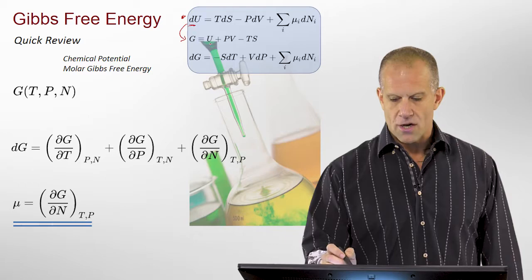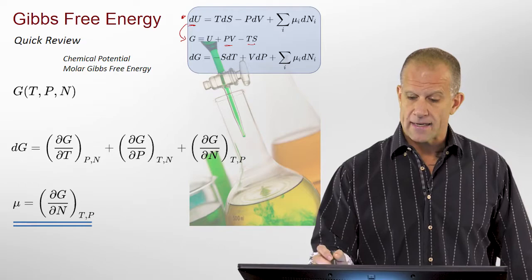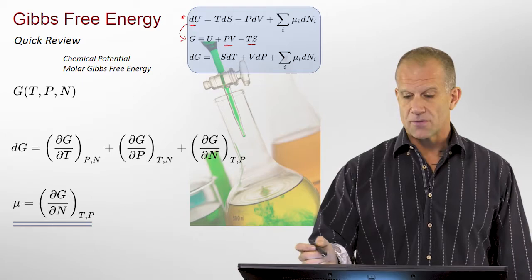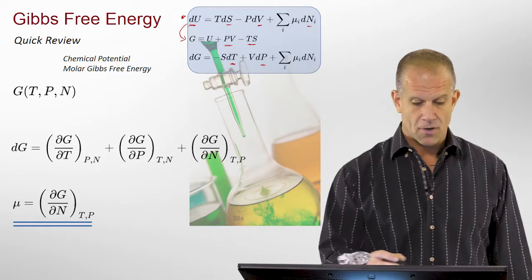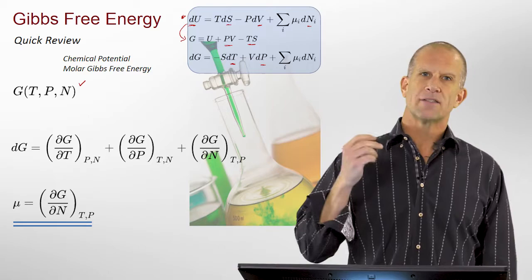This is a Legendre transform on both PV work, mechanical work, and heat. It switches the dependent variables from internal energy — entropy, volume, and number of moles — to temperature, pressure, and number of moles, as we've seen here.